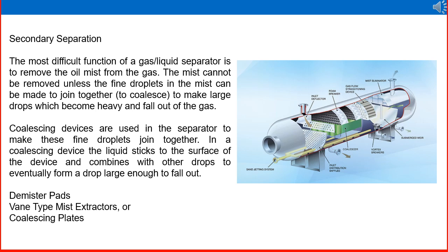Secondary separation is the most difficult function of a gas-liquid separator — to remove the oil mist from the gas. The mist cannot be removed unless the fine droplets can be made to join together, or coalesce, to form large drops which become heavy and fall out of the gas. Coalescing elements are used in the separator for this purpose — liquid sticks to the surface of the element and combines with other drops to eventually form a drop large enough to fall out. Various demister pads, vane-type mist extractors, or coalescing plates are installed as internals of the separator, which we will study in detail.